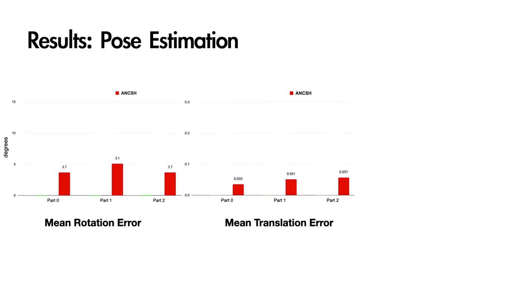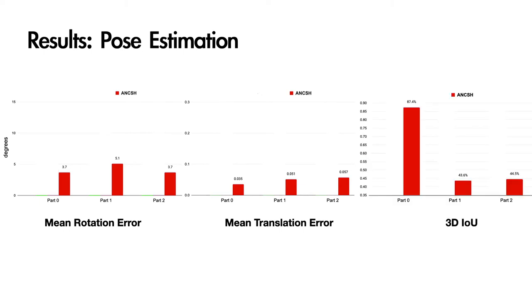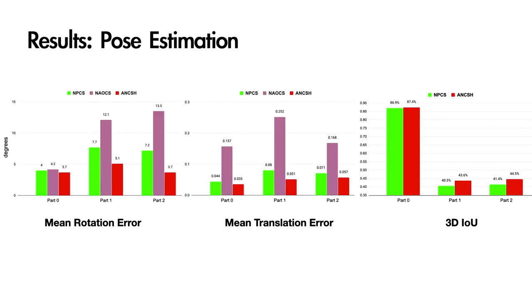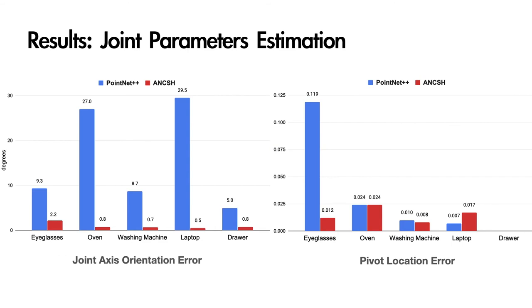Our method can generate consistent and more accurate part poses. Here we show the pose estimation results on the eyeglasses category with three parts. We use per-part mean rotation error, translation error, and 3D-IOU as evaluation metrics. We compare our method with baselines using NPCS or NOX without leveraging kinematic chain constraints. Our method reduces 60% pose error and improves 3D-IOU. ANCHE also enables highly accurate joint parameter estimation, including joint axis orientation and pivot point location. We first predict joint parameters in NOX while joints are always in their canonical state, and then transform the predictions into camera space using predicted part poses. Our method significantly outperforms a similar voting-based PointNet++ network which directly regresses joint parameters in camera space.